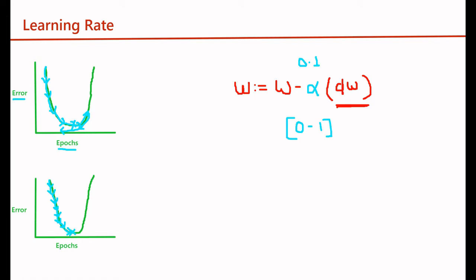The thumb rule says that you have to set the learning rate very carefully and it should not be very large or very small. It should be moderate, which will help us reach our convergence point with less error and within less time.